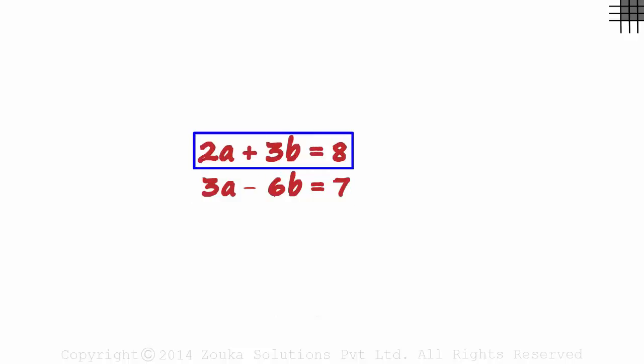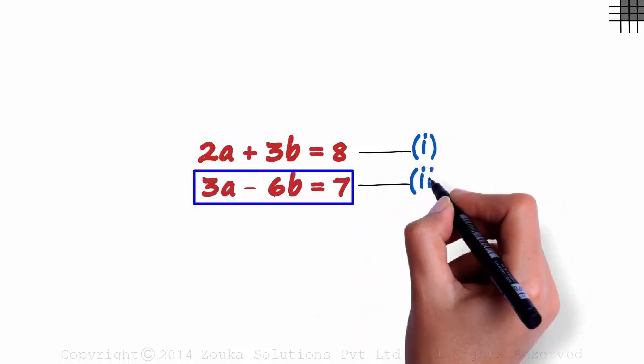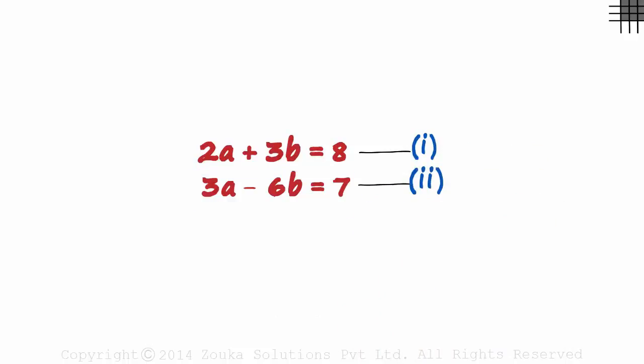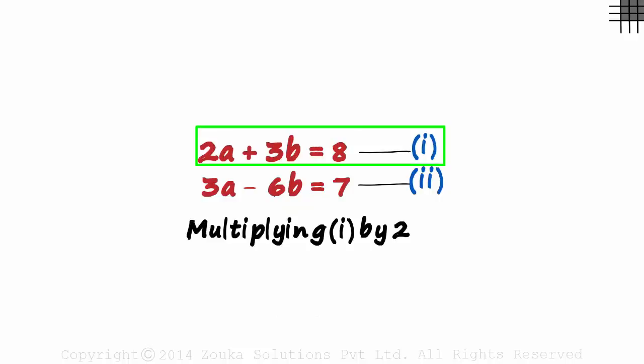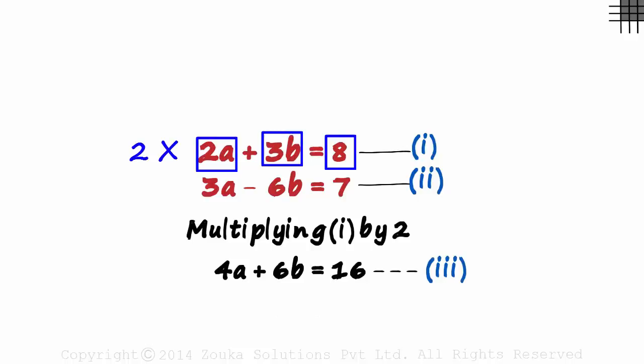Let's number the equations first. Let this be the first equation and this be the second one. Now let's think a bit. If we multiply the first equation by 2, we will get 4A plus 6B here. Then we can simply add them and eliminate the B. So multiplying equation 1 by 2 gives us 4A plus 6B equal to 16, which can be our third equation. We simply multiplied each term by 2.